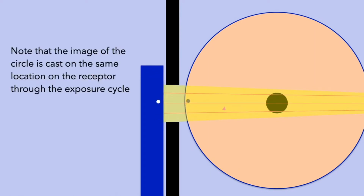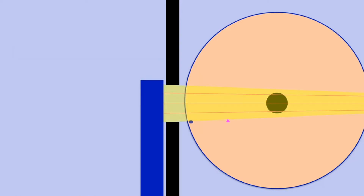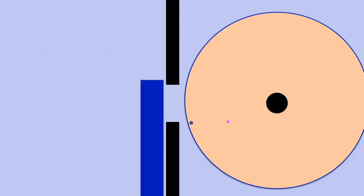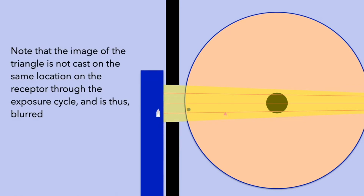Now let's take a closer look at image formation as structures move past the beam. In the presented scenario, the receptor moves past the collimator at the same speed as objects located on the outer edge of the disc. Consider an object located on the outer edge of the disc, represented here by the circle. Due to the coordinated movement of the disc and the receptor, the image of the circle is cast on the same location on the receptor through the exposure cycle. Next, consider a structure located away from the outer edge of the disc, represented here by a triangle. The image of the triangle is not cast on the same location on the receptor through the exposure cycle, and thus appears as a blurred horizontal streak.